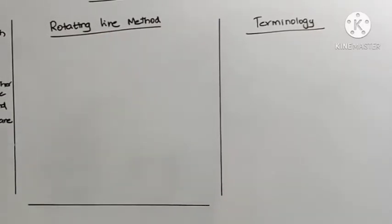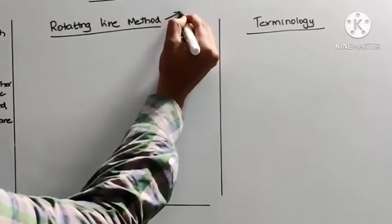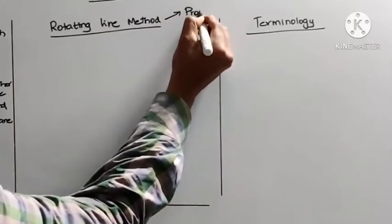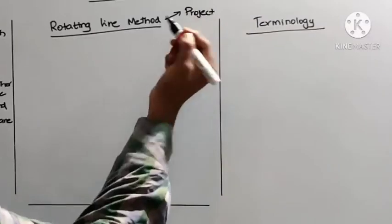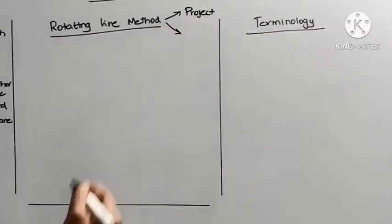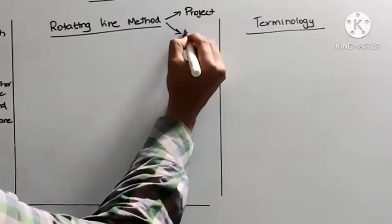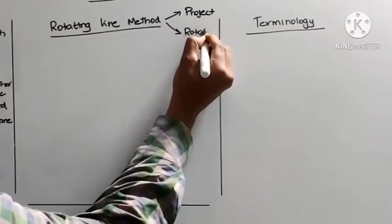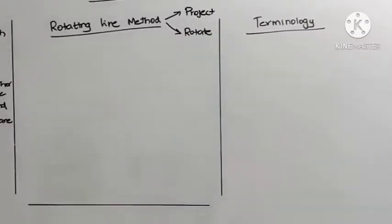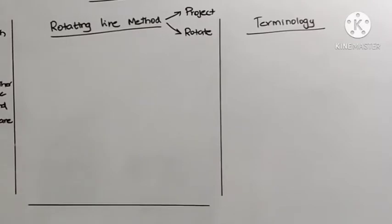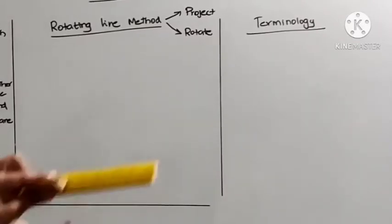The rotating line method has two important steps. The first one is Project, and the second one is Rotate. Let's see how to solve this case 4 problem using the rotating line method. Let me draw the reference line first.